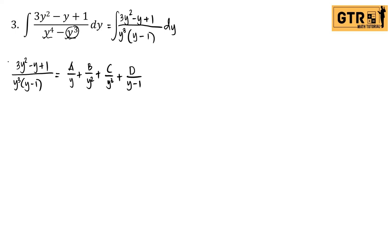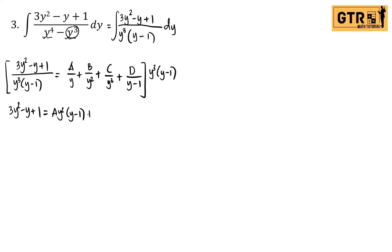To solve for A, B, C, and D, multiply both sides by y³(y - 1) to eliminate the denominator. On the left side we get 3y² - y + 1. On the right: A times y²(y - 1), plus B times y(y - 1), plus C times (y - 1), plus D times y³.